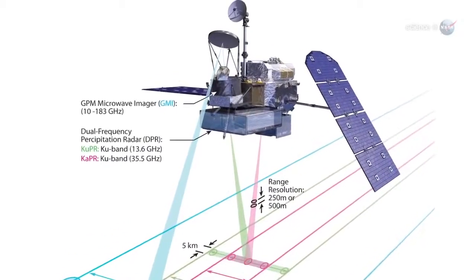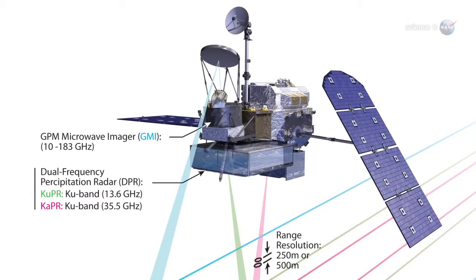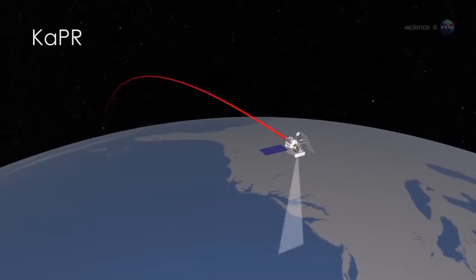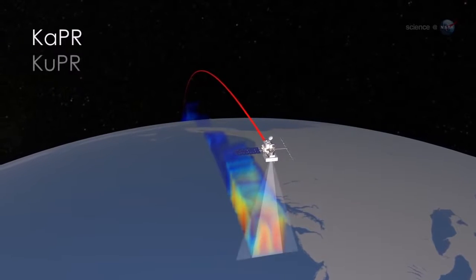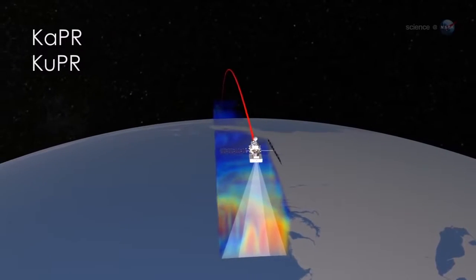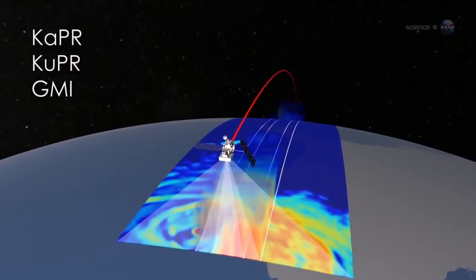GPM carries two instruments to measure rain and snowfall—the dual-frequency precipitation radar and the GPM Microwave Imager. Compared to instruments flown on previous Earth science satellites, GPM's Precipitation Radar and Microwave Imager can see deeper into clouds and detect smaller particles of rain, ice, and snow.